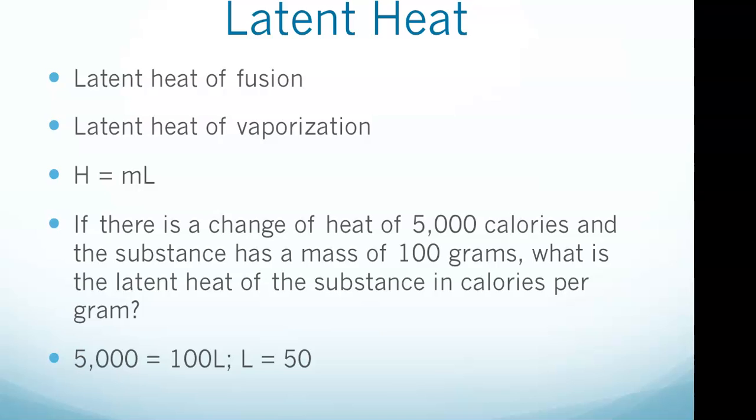You could see a question like the one we have here: if there is a change of heat of 5,000 calories and the substance has a mass of 100 grams, what is the latent heat of the substance in calories per gram? They're going to give you two of the three variables and you just have to solve using basic math. In this question, we are given H and m, and we need to solve for L. You set it up: 5,000 = 100L, divide each side by 100, and L, the latent heat, equals 50.